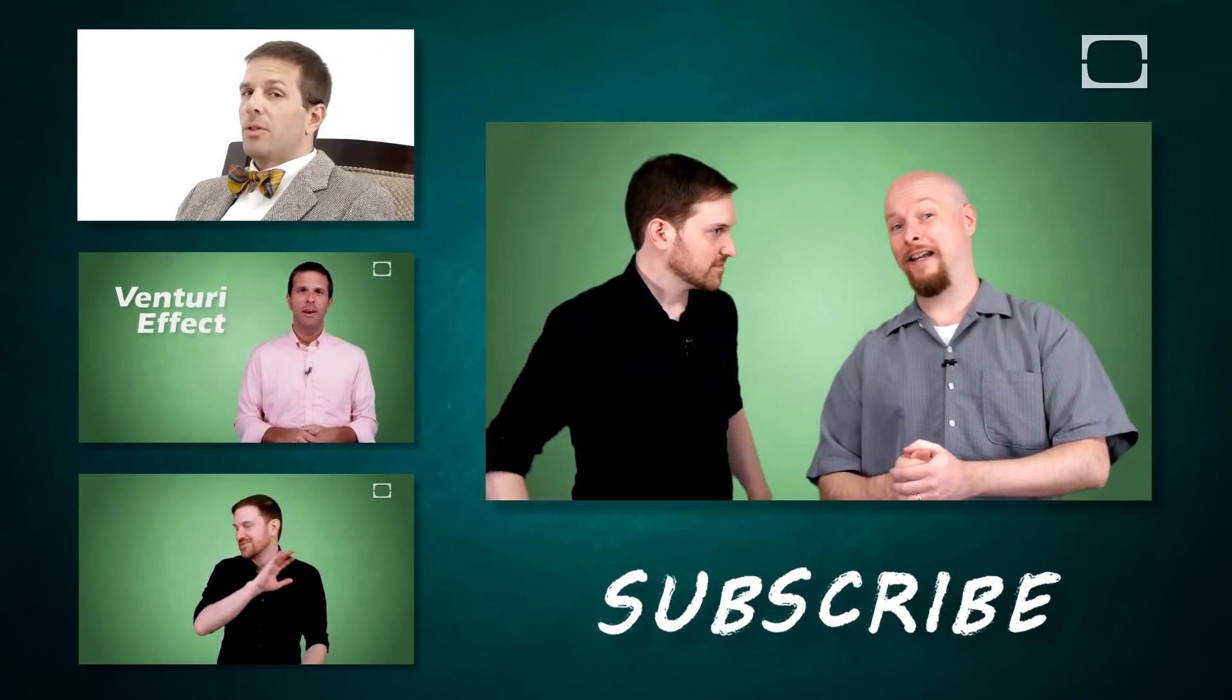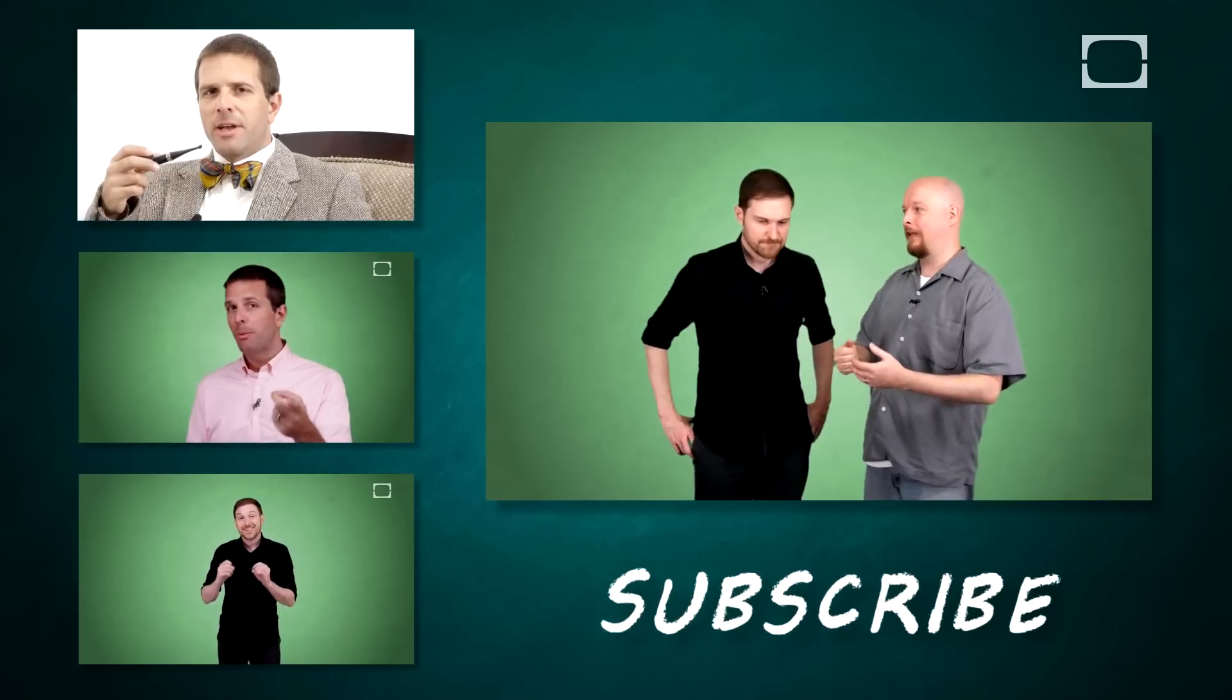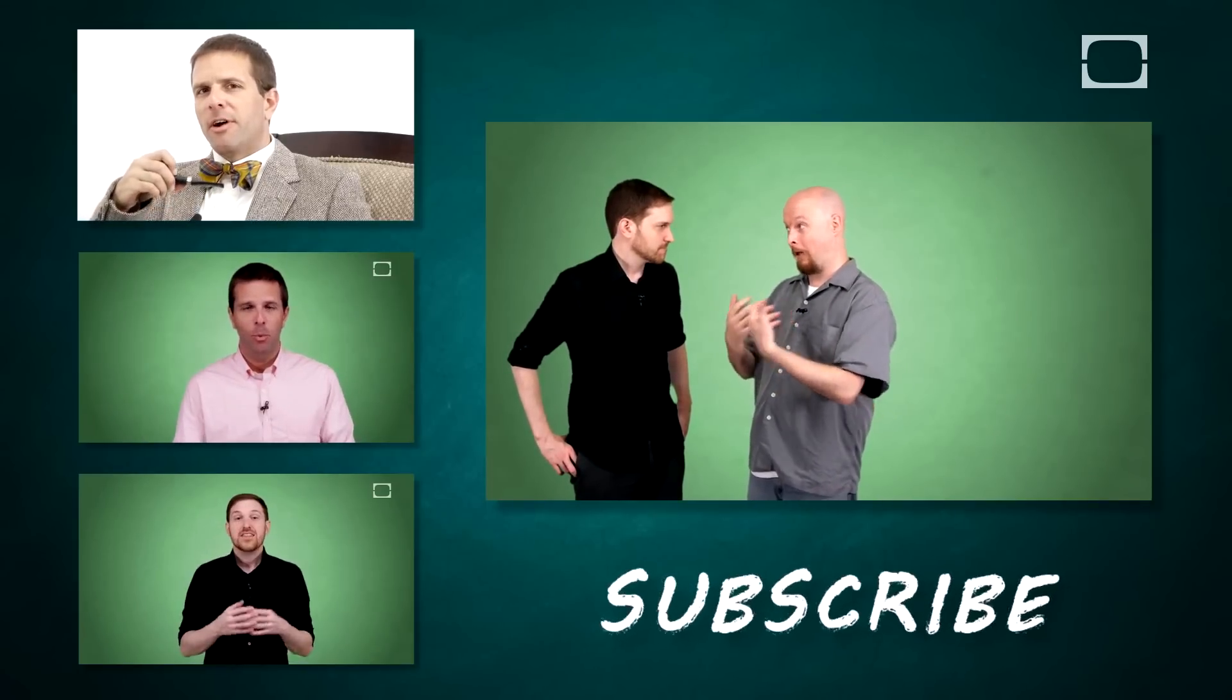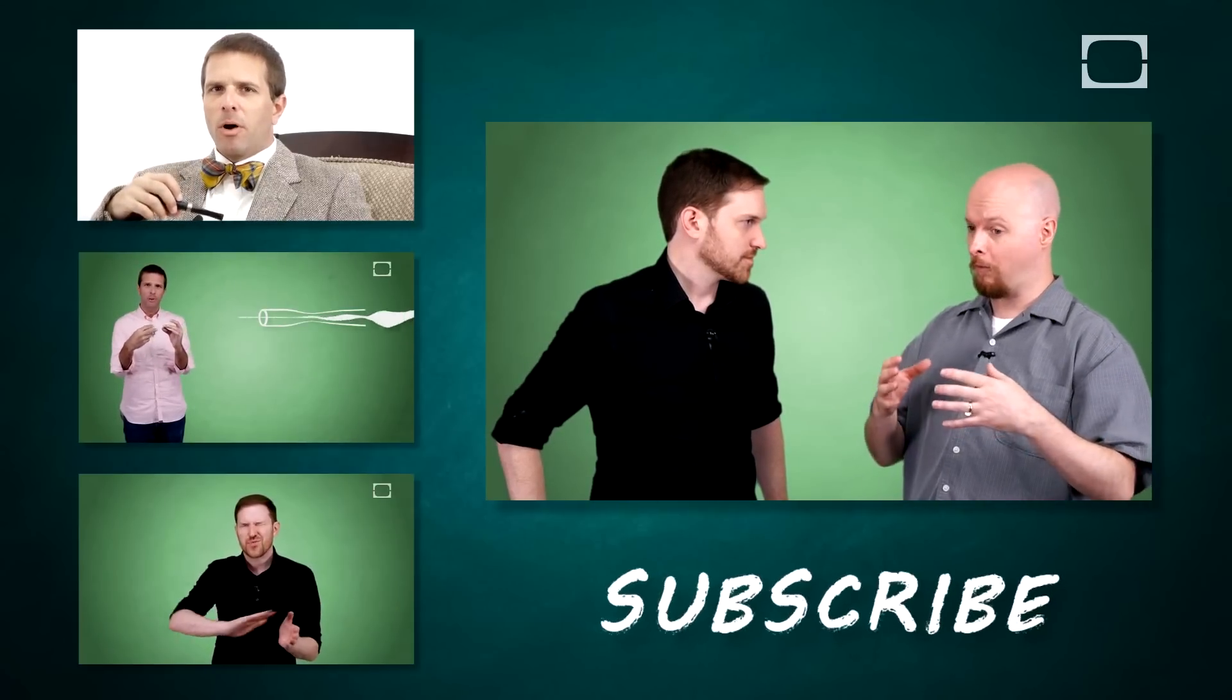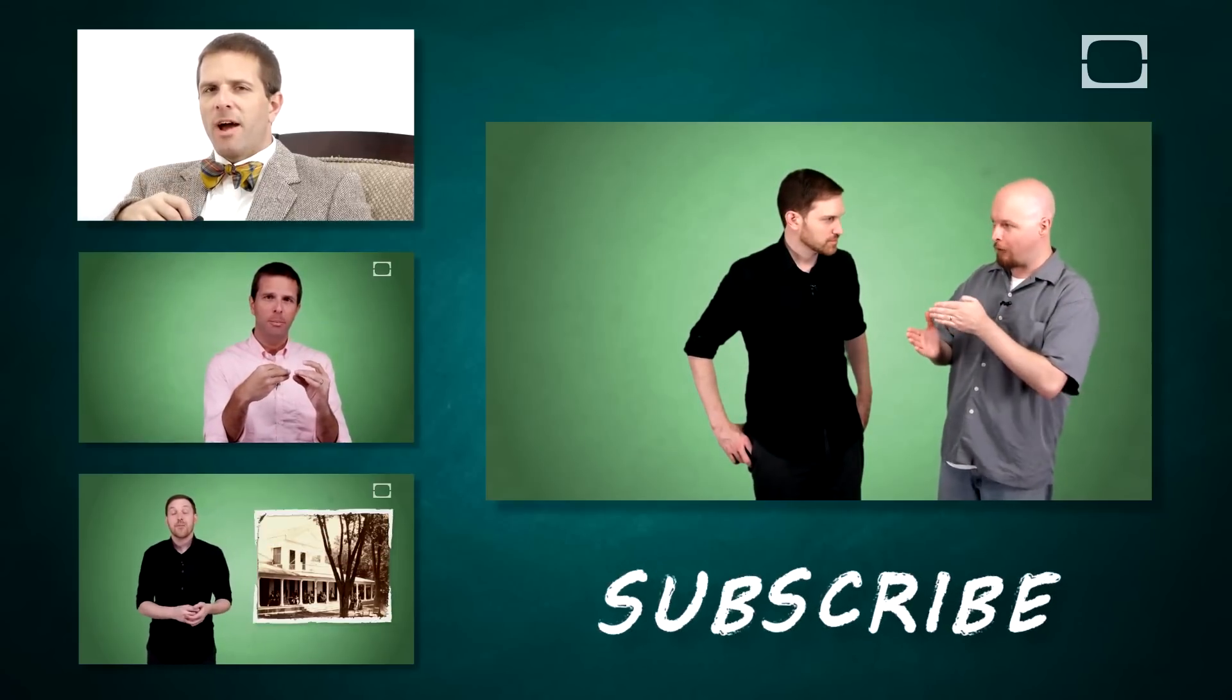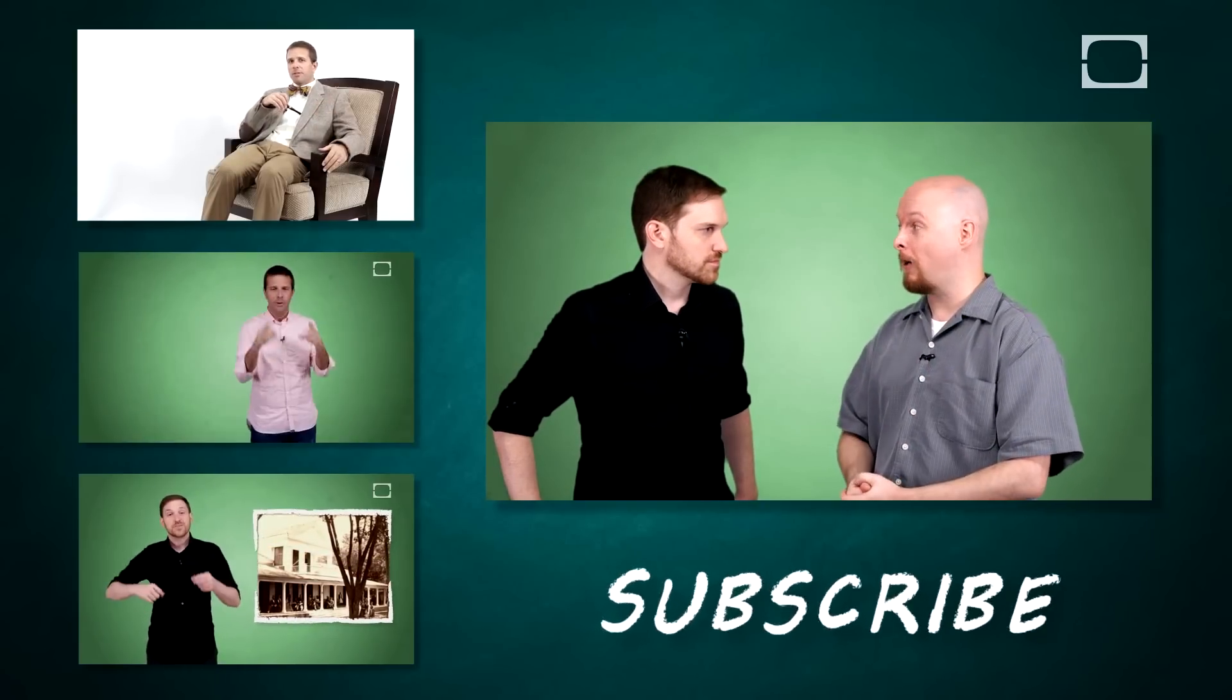Thank you. So Ben, the Kessel Run is in fact a smuggling route in the Star Wars universe. Now the retconned explanation of why Han Solo refers to the parsecs is that this route goes through several black holes, and for a ship to be safe, it has to go around the black holes as much as possible. So the safest route is probably around 15 parsecs.